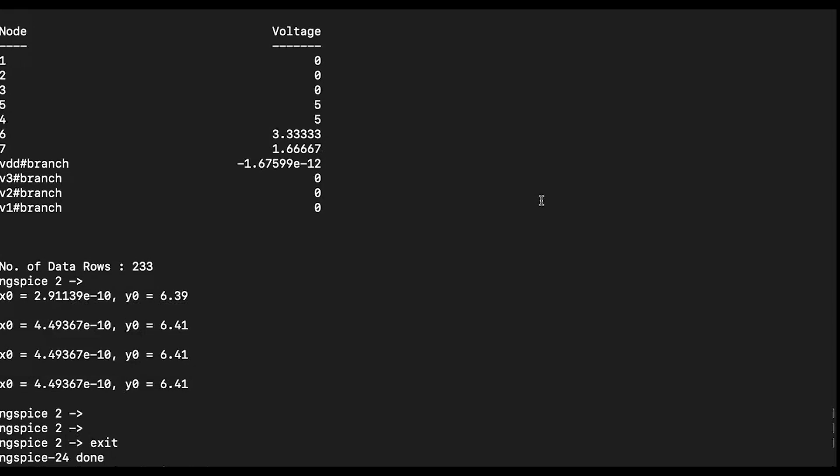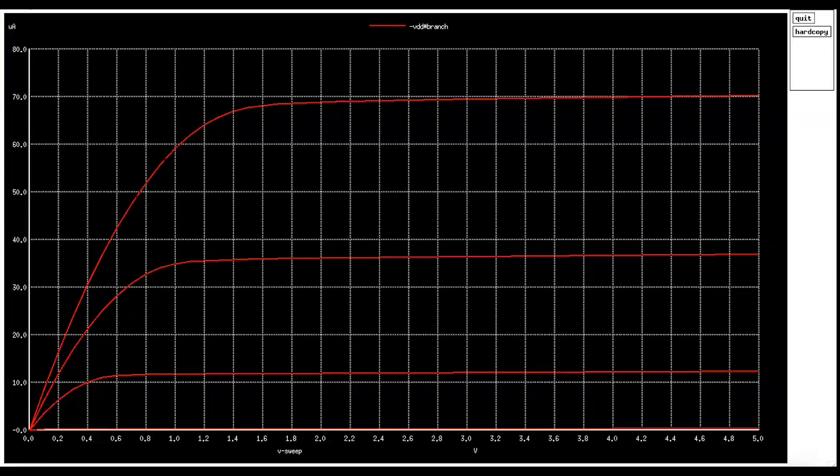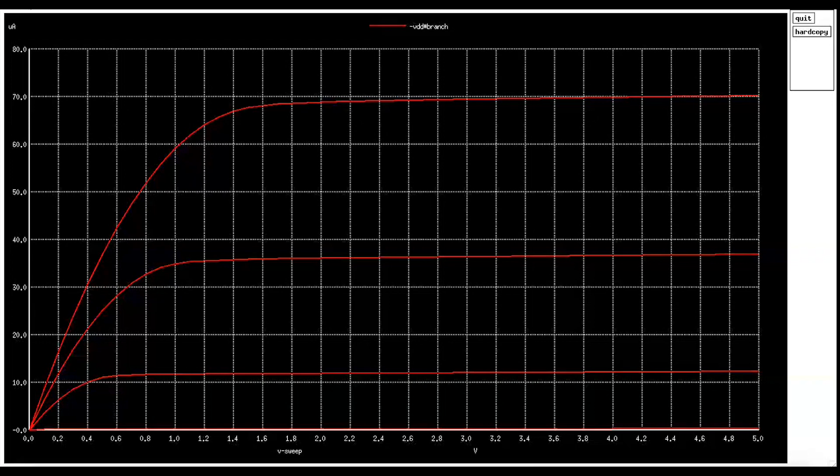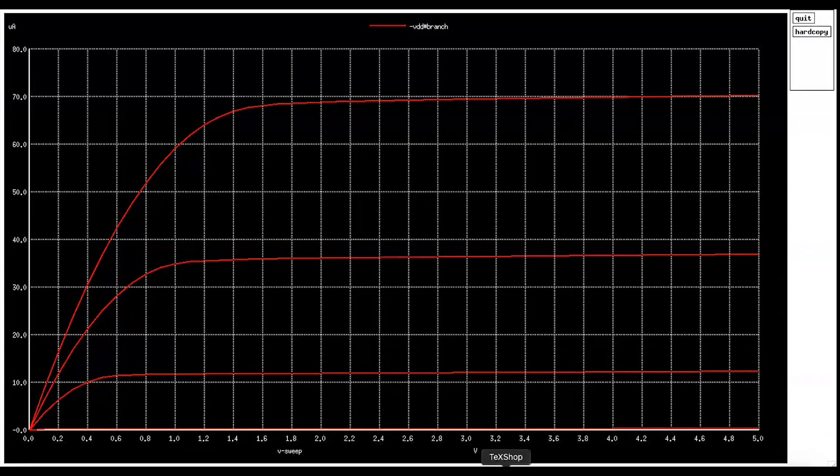Can you tell me what this is of NMOS? Here I have ID at the y-axis and VDS in the x-axis. I am changing VGS, sweeping VGS.